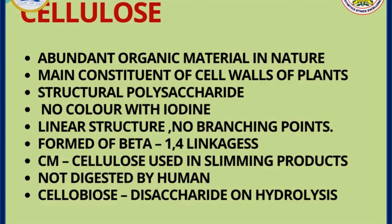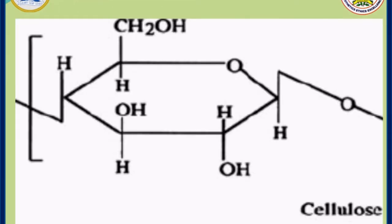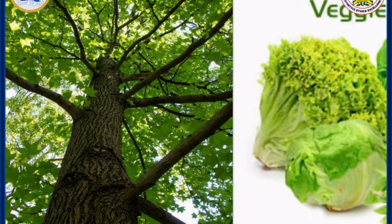Cellulose is a structural polysaccharide which constitutes the main component of cell walls of plants. It is linear — no branch points — and is formed of beta-1,4 linkages. It is a homopolysaccharide of glucose and is not digested by humans. Because it is not digested, it forms the fiber in our diet. The disaccharide unit of cellulose is cellobiose, where two glucose units are linked by a beta linkage. We lack the enzyme cellulase, which is why cellulose cannot be digested and instead acts as dietary fiber.